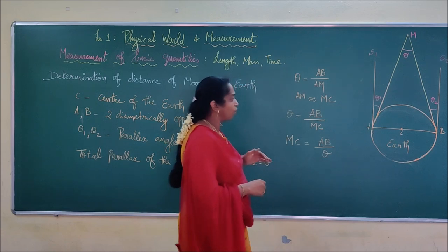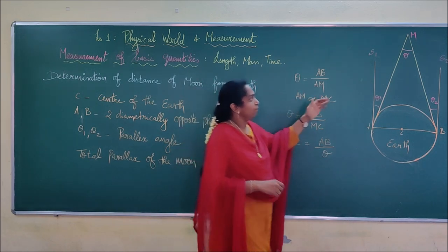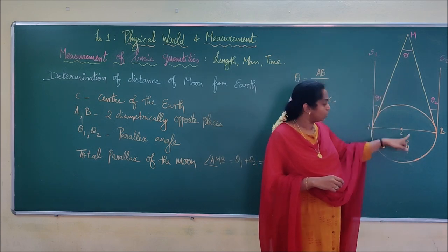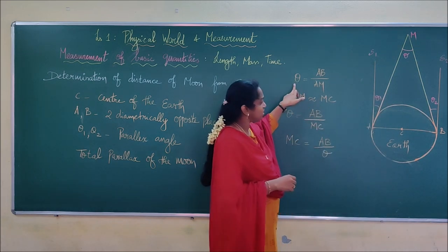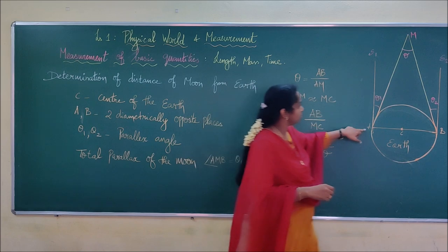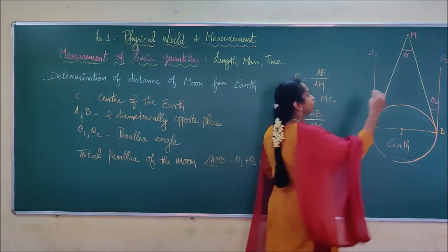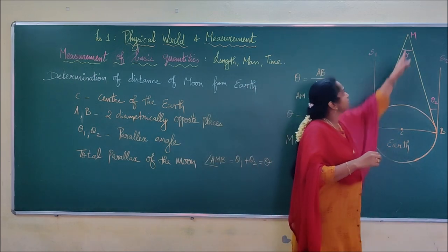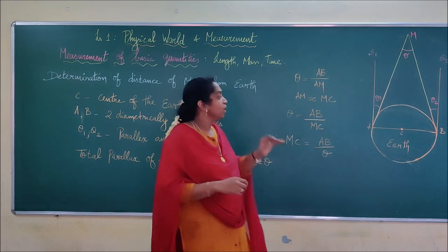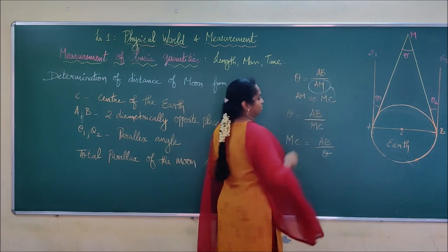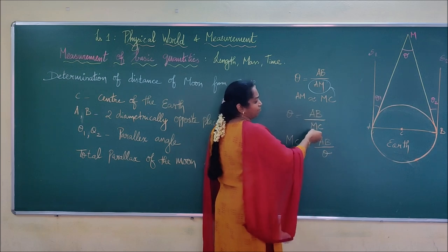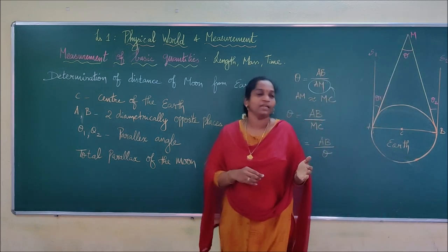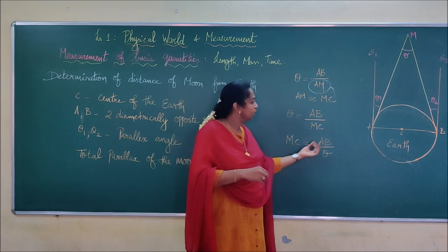Using the arc length formula, arc = angle × radius, we write: theta = AB / AM, where AB is the basis (distance between A and B) and AM is the distance from A to the Moon. Since A, M, and C (centre of Earth) are approximately equidistant, we replace AM with MC. Therefore: theta = AB / MC, which rearranges to MC = AB / theta. Here MC is the direct distance from the centre of the Earth to the Moon.